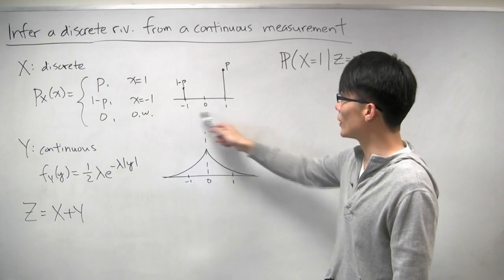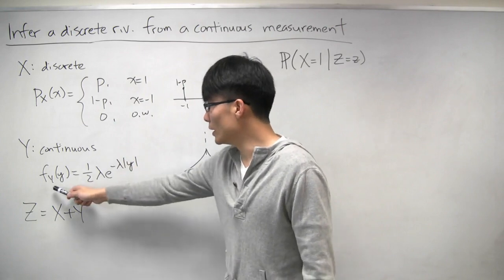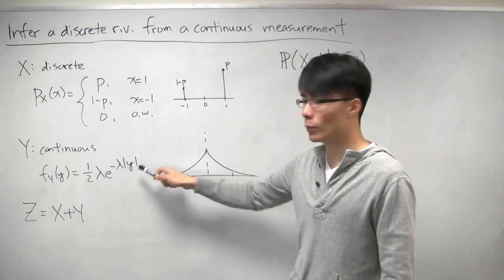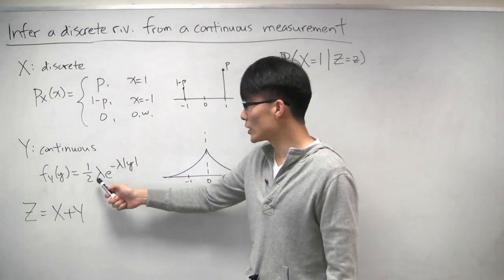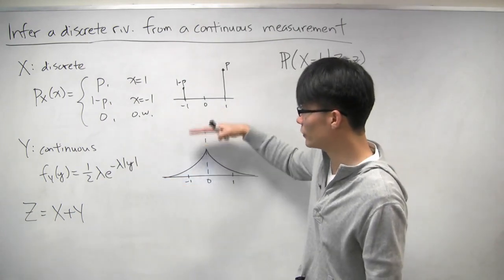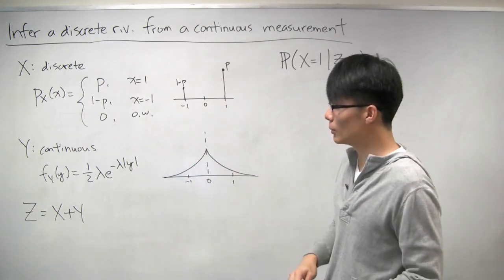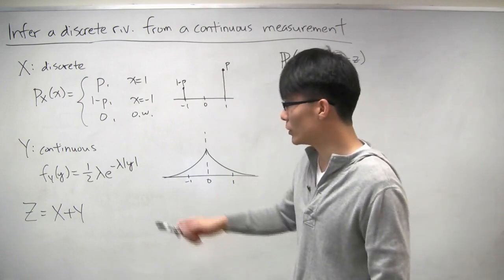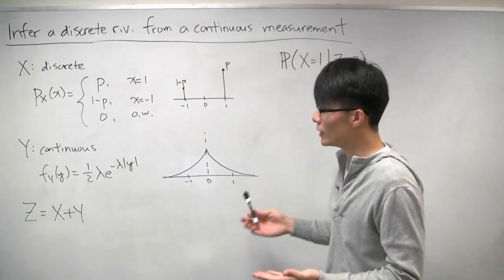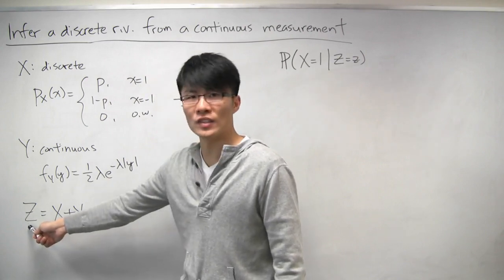Here's a diagram of this PMF. We also have another random variable y, which is continuous, and its PDF is given by one-half lambda e to the minus lambda times the absolute value of y. This looks like a two-sided exponential flattened by a factor of one-half — kind of like a tent that goes both ways. We also have a random variable z, which equals the sum of x and y, and the problem is figuring out what x is based on an observed value of z.